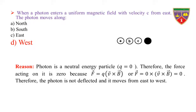Reason: Photon is a neutral energy particle, so Q is equal to zero. Therefore, the force acting on it is zero, because F = Q × V cross B = 0 × V cross B = zero. So the photon is not deflected; it continues moving from east to west. Hence, the photon moves along west.